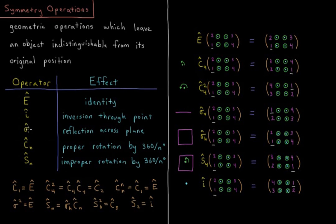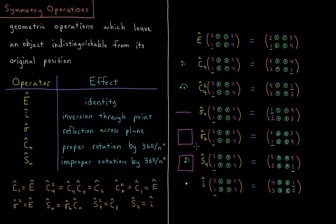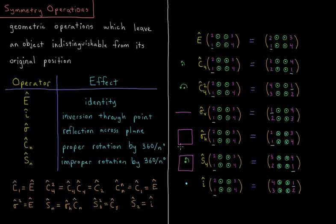We have sigma, which is reflection across a plane. I have different examples of sigma here, one labeled as sigma h for reasons we'll see in future videos. This plane is the plane of the board here.